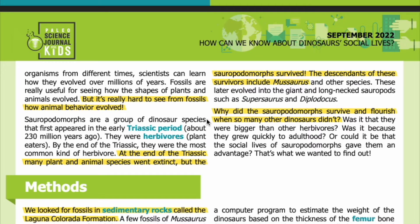Sauropodomorphs are a group of dinosaur species that first appeared in the early Triassic period, about 230 million years ago. They were herbivores — plant eaters. By the end of the Triassic, they were the most common kind of herbivore. At the end of the Triassic, many plant and animal species went extinct, but the sauropodomorphs survived. The descendants of these survivors include Mussaurus and other species, which later evolved into the giant, long-necked sauropods such as Supersaurus and Diplodocus.